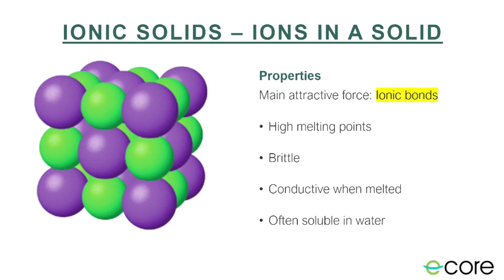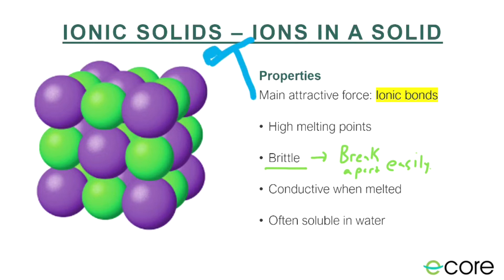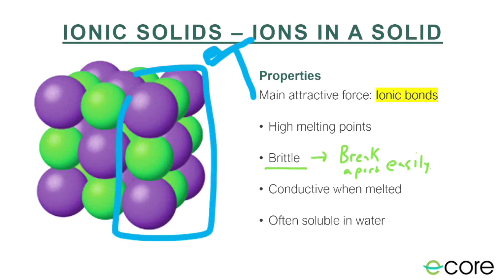Another thing to know about ionic compounds is that they're brittle — they break apart easily. They're not malleable. If I try to hammer one into a flat sheet, it'll just fall apart. The reason is, if I hit it with a hammer and a whole layer of ionic compounds shifts down one, that disrupts the structure and breaks the bonds. Then these positive atoms would be next to other positive atoms, and negative next to negative, and they would fly apart.